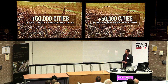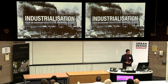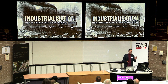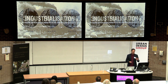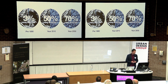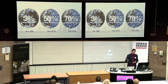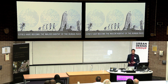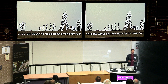Fast forward to today, and we're looking at 50,000 cities across the globe, with 29 megacities having populations over 10 million. But it was industrialization in the early 1800s that radically transformed our approach to growth. We saw the agrarian society shift to industrial society, and with that a rapid population shift in our cities. Pre-1800, 3% of people lived in cities. Today, 50%. By 2050, 70% — that's 6.8 billion people living in cities. Our cities have essentially become the major habitat of the human.